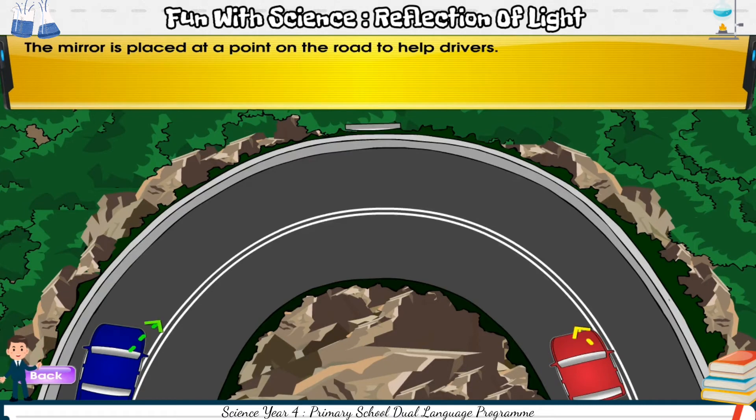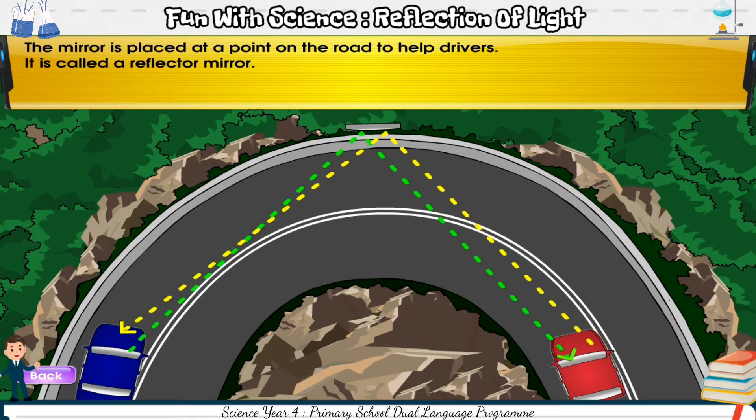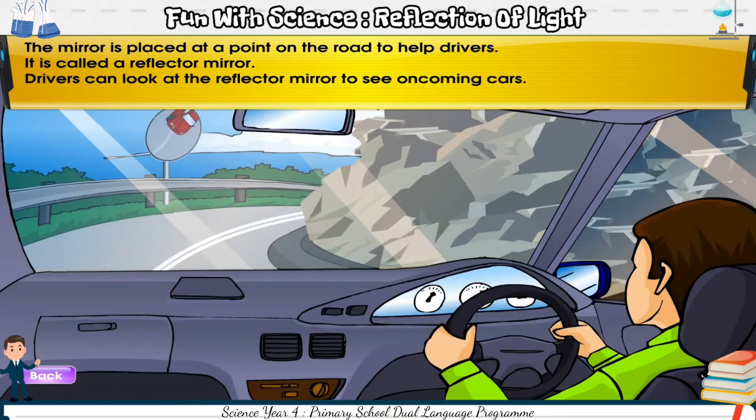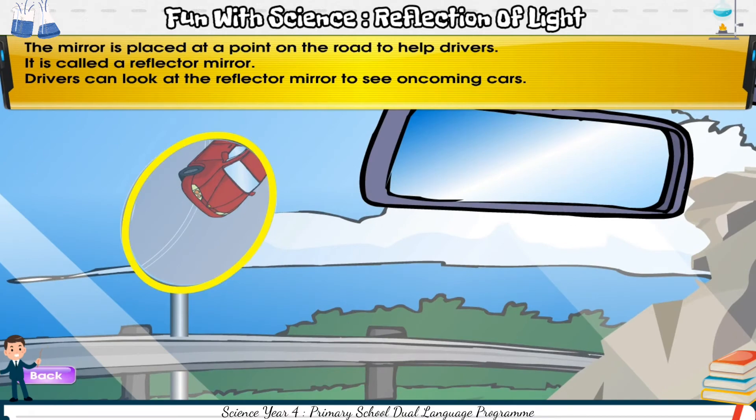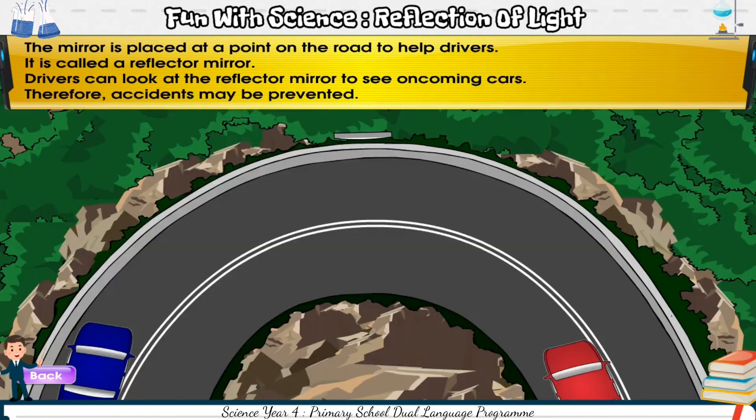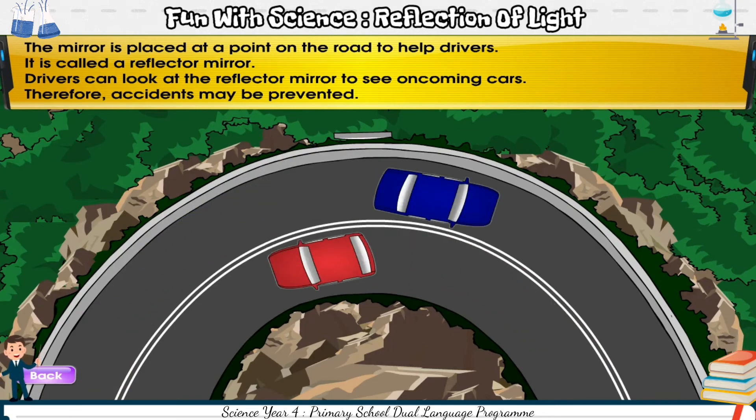The mirror is placed at a point on the road to help drivers. It is called a reflector mirror. Drivers can look at the reflector mirror to see oncoming cars. Therefore, accidents may be prevented.